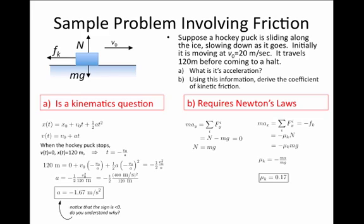I can plug in my value for a from part a of this problem, which is minus 1.67 meters per second squared, and I divide by g, which is 9.8 meters per second squared. And I get a value for mu k, which is 0.17.